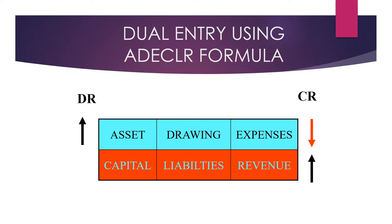Whenever you have a debt to the supplier, for example, it is a liability. So whenever you make a promise to the supplier, you are adding up the business's debt to that supplier, and the supplier's account should be on the credit side. Conversely, whenever capital, liability, or revenue decreases — for example, you pay out to the supplier — the business debt to the supplier is reduced, so the supplier's account should be on the debit side.